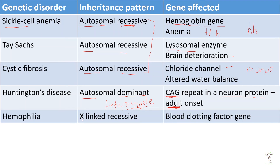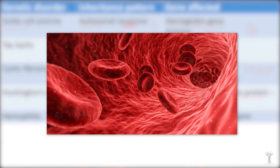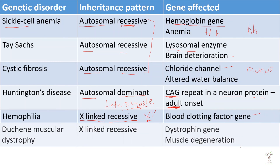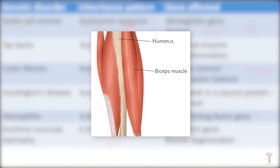Hemophilia is an X-linked recessive disease. This specific kind of hemophilia is a blood clotting disorder that is found on the X chromosome, and it is more common for males to have it because they only have one X. Duchenne muscular dystrophy is also X-linked and also recessive. For females to have this disease she would need to have both mutated alleles, whereas males only need to have one. So again it's more common in males, and this affects a gene called dystrophin which affects the muscles.